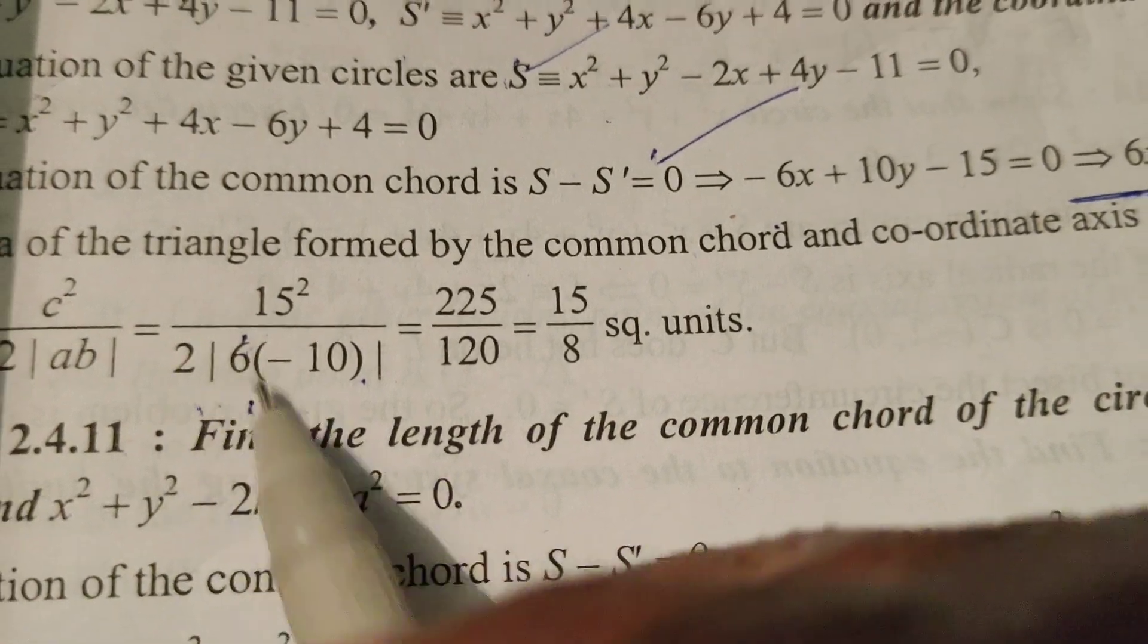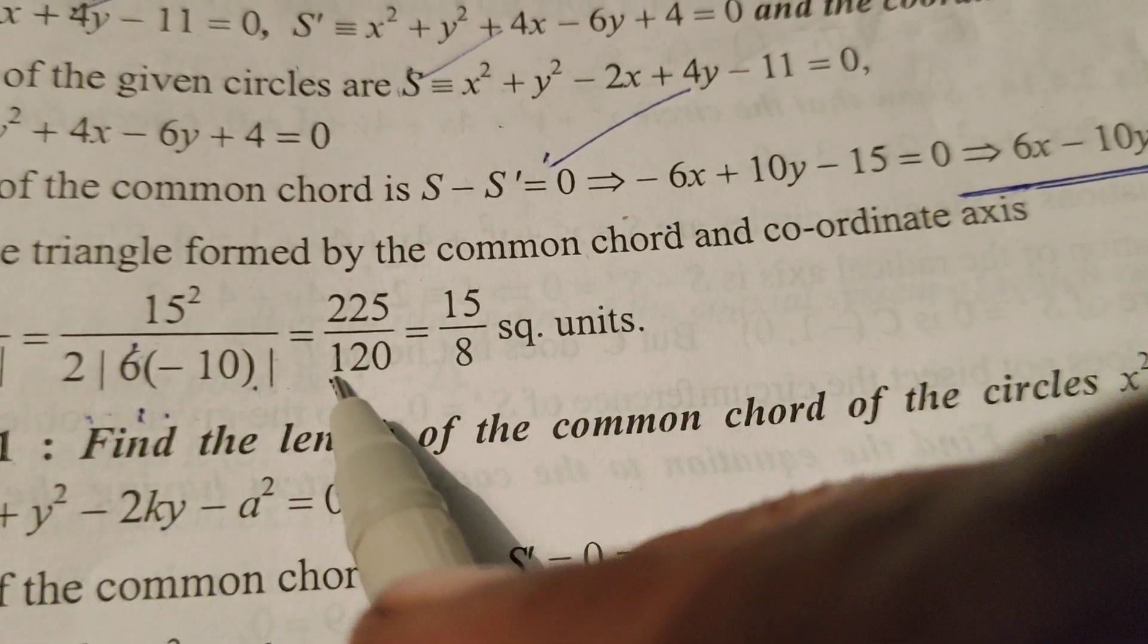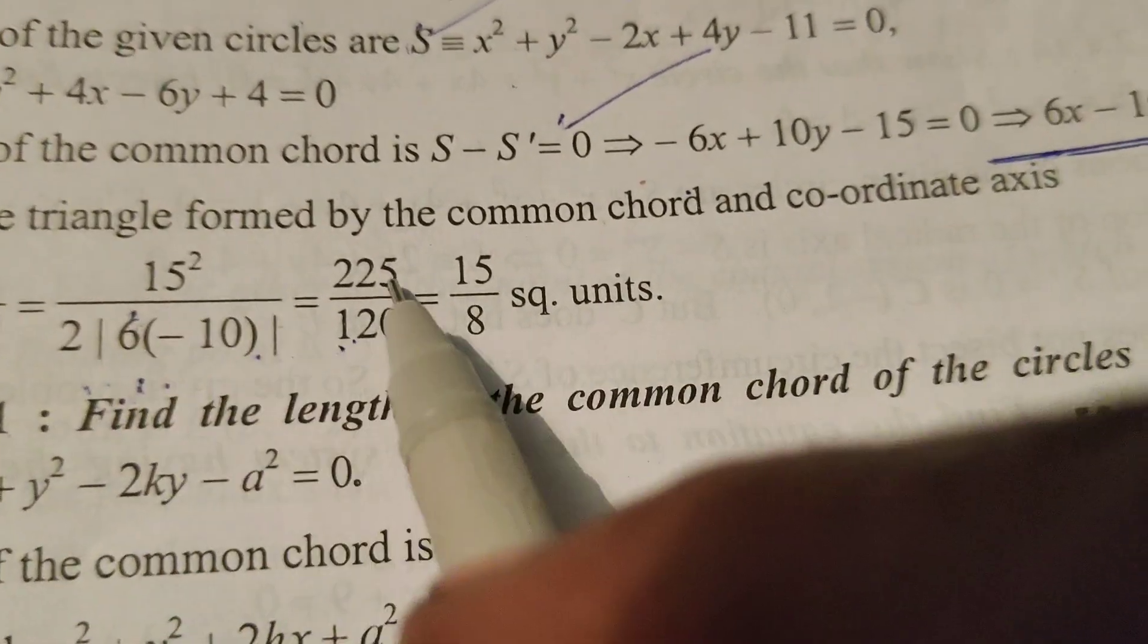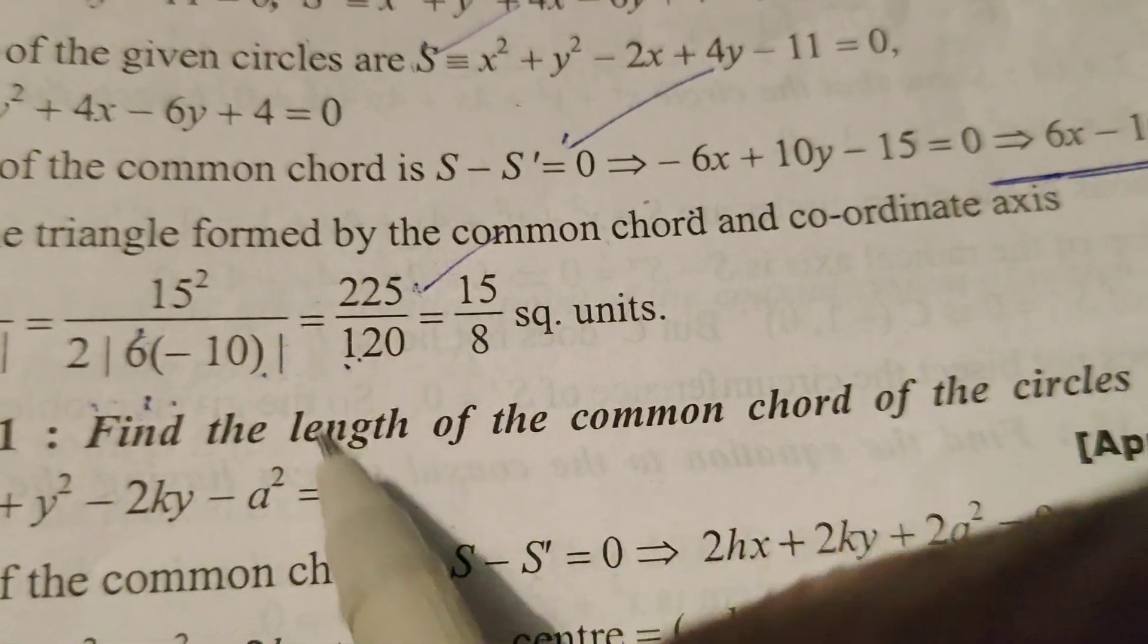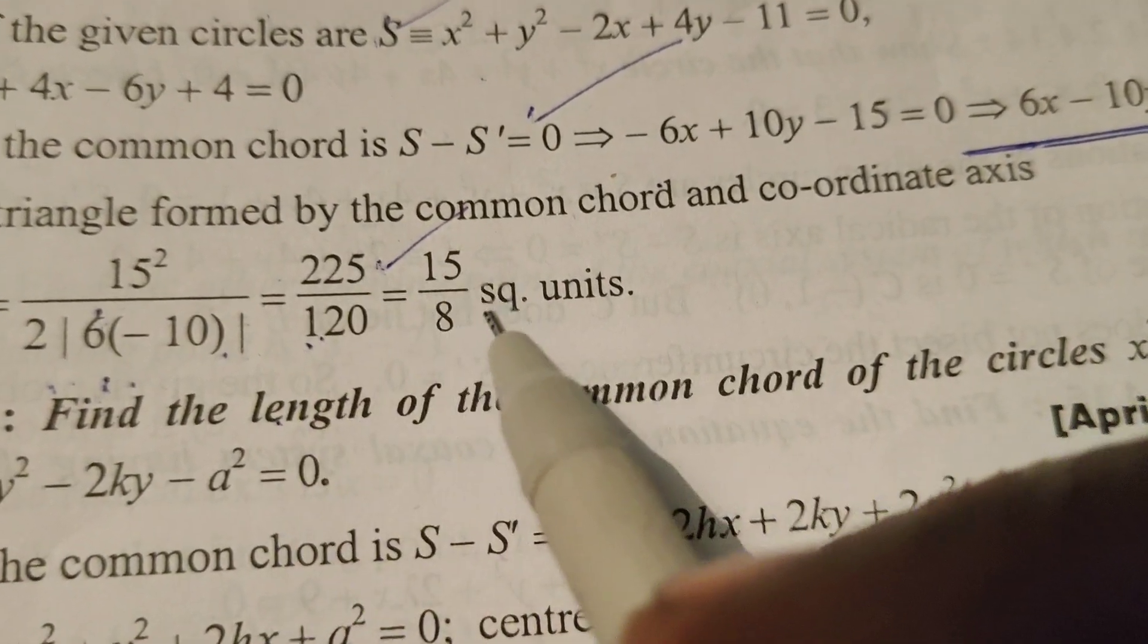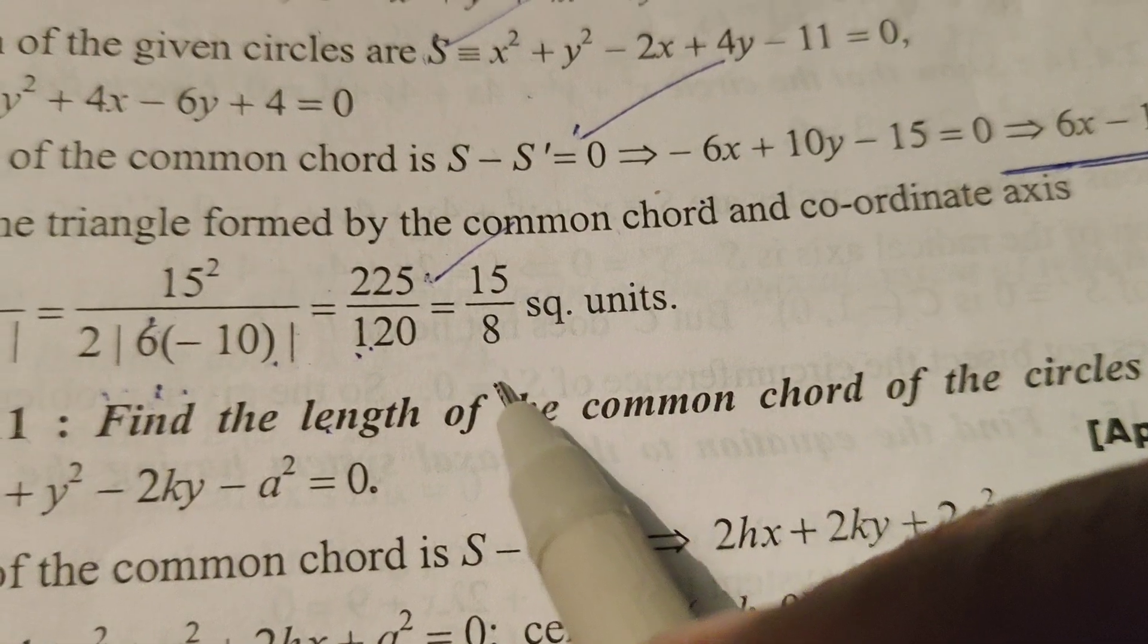After removing the modulus, here I write plus value plus 120. 15 square means 225. 225 by 120, that is 15 by 8.